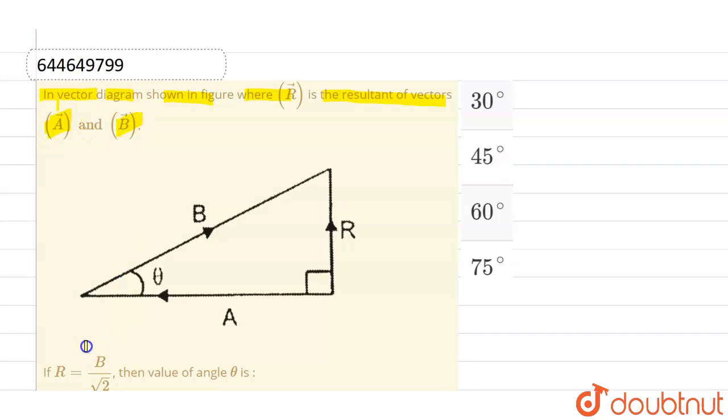Now, if resultant is magnitude of resultant vector is magnitude of b vector divided by root 2, then the value of angle theta is.